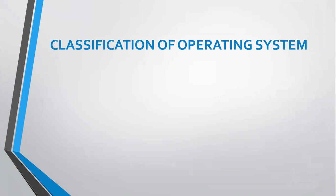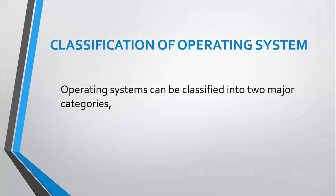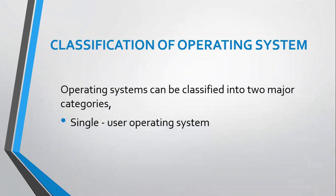Classification of operating systems. Operating systems can be classified into two categories: number one, single-user operating system, and number two, multi-user operating system.